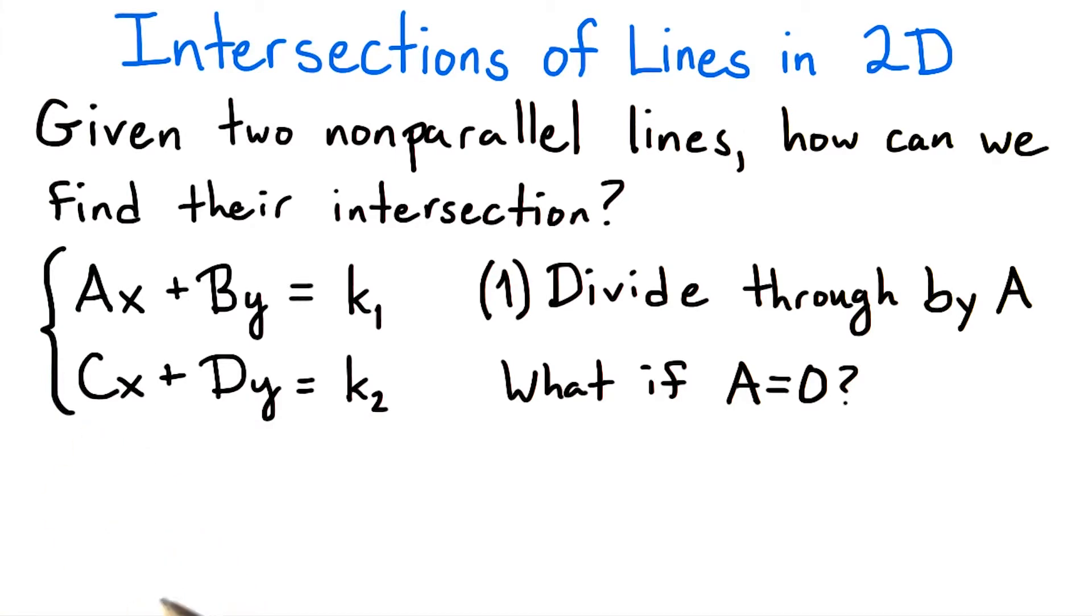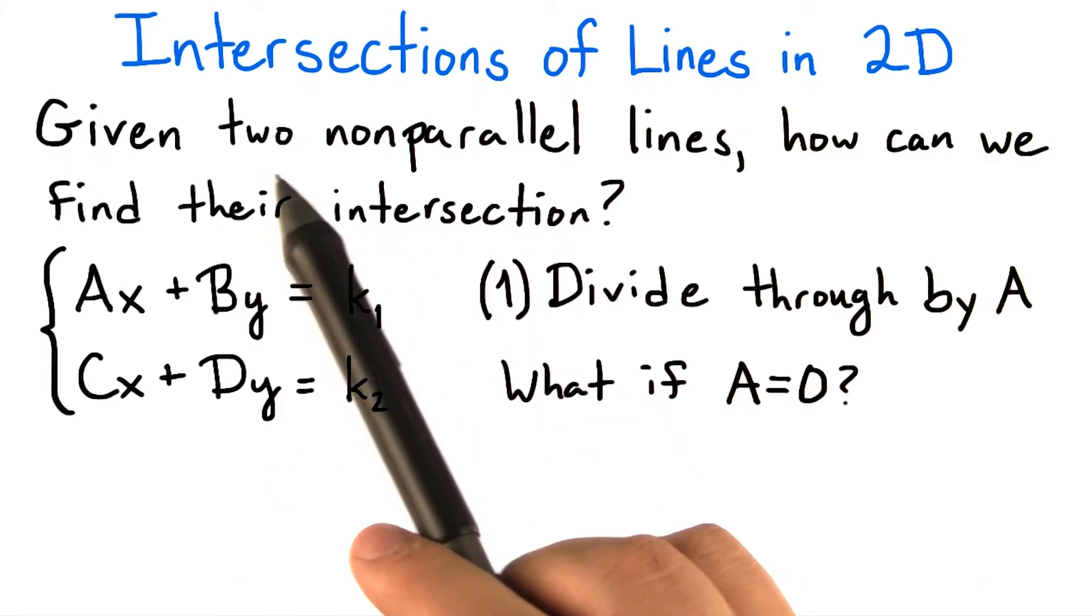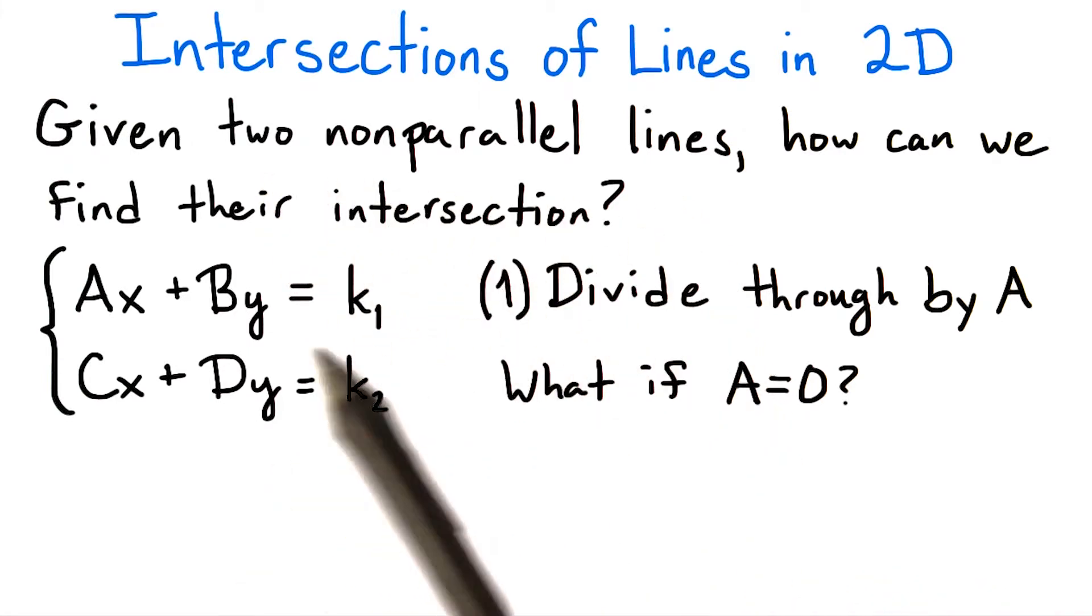Actually, that can't happen. Because if a and c are both 0, then the lines are just of the form y equals k1 over b and y equals k2 over d, which are both horizontal lines. But since we assume the two lines were not parallel, they both can't be horizontal.